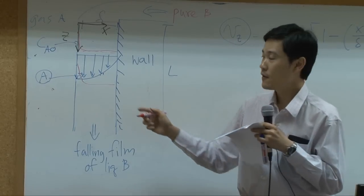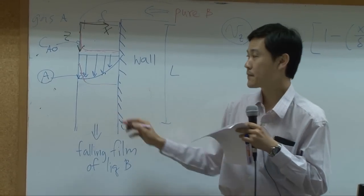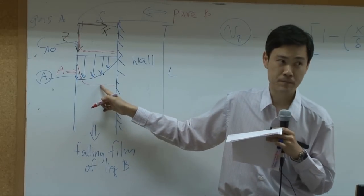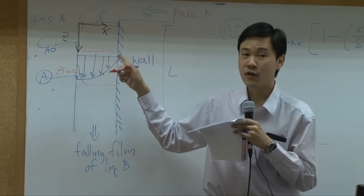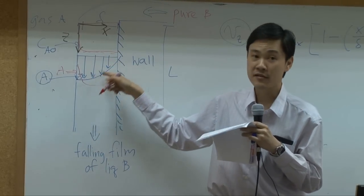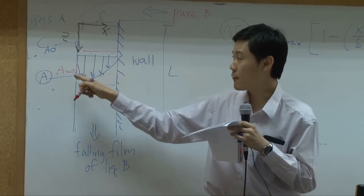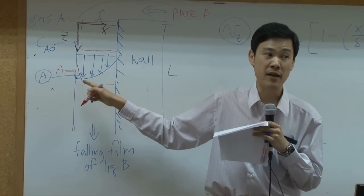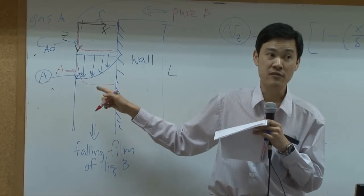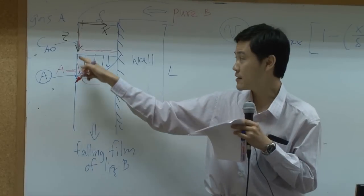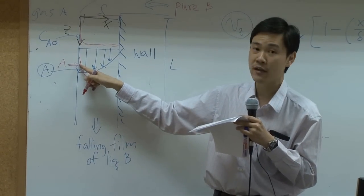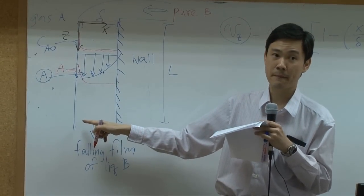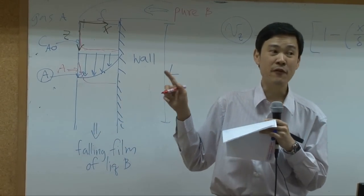When you look into this picture, A is dissolved into liquid. If you look together with the velocity profile, it means that once A is dissolved into liquid, A experiences the maximum velocity right away because this is maximum velocity. Once it's dissolved into liquid it was swept by maximum velocity, so it is very hard for A to diffuse all the way to this part because the stream is very strong here.